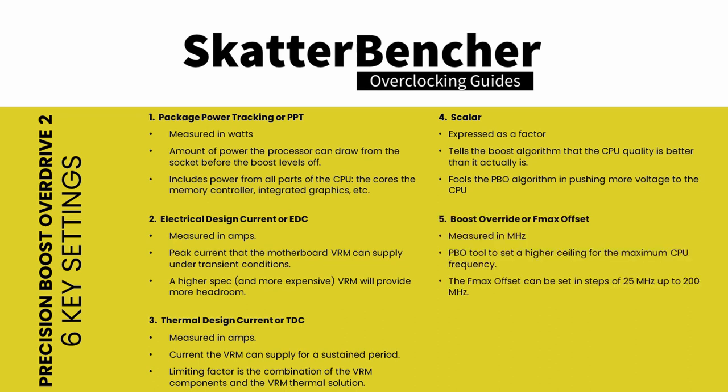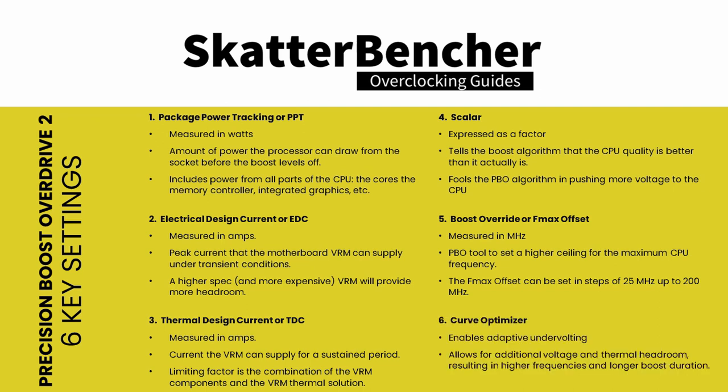Setting five: Boost Override or FMAX Offset, measured in MHz, is a tool to set a higher ceiling for the maximum CPU frequency. The FMAX Offset can be set in steps of 25 MHz up to 200 MHz. Setting six: Curve Optimizer is a tool that enables adaptive undervolting, allowing for additional voltage and thermal headroom, resulting in higher frequencies and longer boost duration.